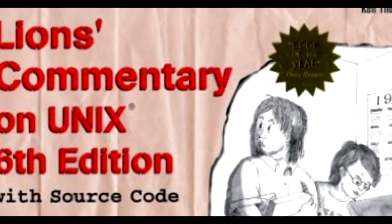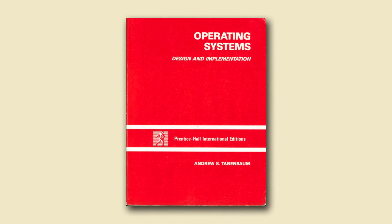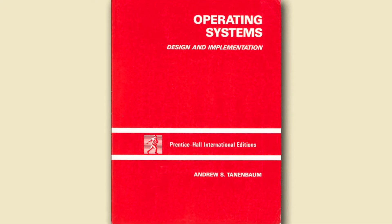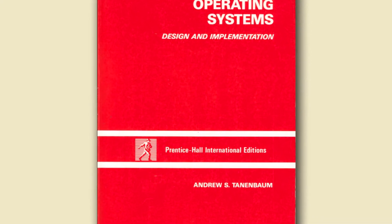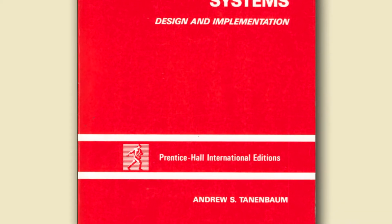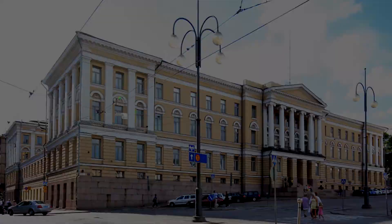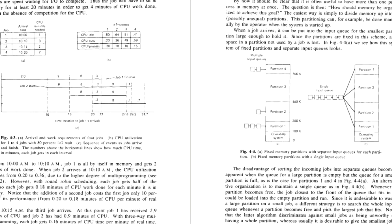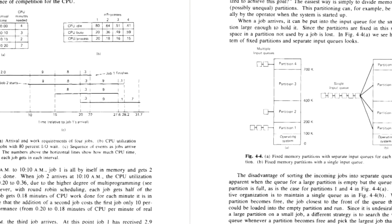Inspired by John Lyons' Unix book, Tannenbaum released his own book in 1987 titled Operating Systems Design and Implementation, which fully documented the Minix operating system and included the full OS on floppy disk. Linus Torvalds, a young computer scientist from Finland, purchased Tannenbaum's book and installed Minix on his newly purchased computer while enrolled in the University of Helsinki. The book helped Torvalds get a better understanding of OS design and would play a huge role in his future.